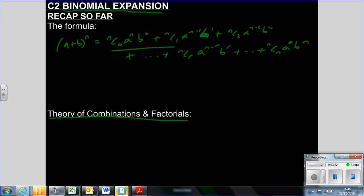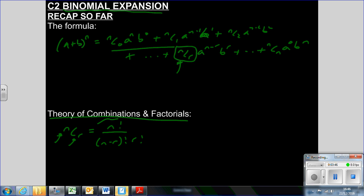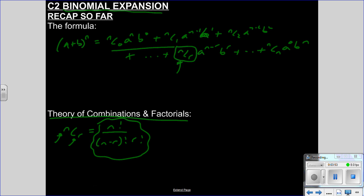I really recommend using the formula, but it is useful to know where this comes from — the theory of combinations and factorials. That's what n choose r is about. n choose r describes the number of unique ways you can pick r things from a total population of n things, and equals n factorial over (n minus r) factorial times r factorial. This is useful and saves you a lot of time.